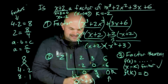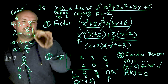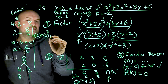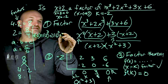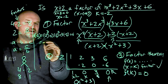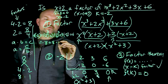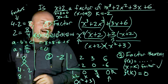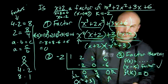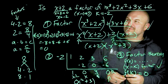Plugging in f(negative 2): we get (negative 2)³ plus 2(negative 2)² plus 3(negative 2) plus 6, which equals negative 8 plus 8 minus 6 plus 6, and that gives us 0. Since f(negative 2) equals 0, x plus 2 is confirmed as a factor. Those are three ways to identify if you have a factor of a polynomial — factoring, synthetic division, and the Factor Theorem. Hope that was helpful!